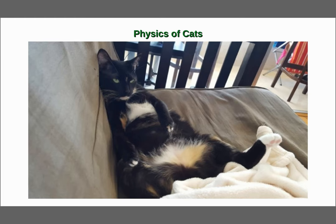Welcome, ladies and gentlemen, to the first of our little mini review lectures. With these review lectures, I'd like to review some topics that we've covered in class this semester, but we're going to do it by having a little fun applying these tools to specific topics. Today, we're going to look at the physics of cats, and use them as a demonstration of what we call a back-of-the-envelope calculation.